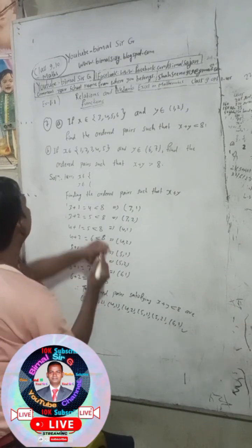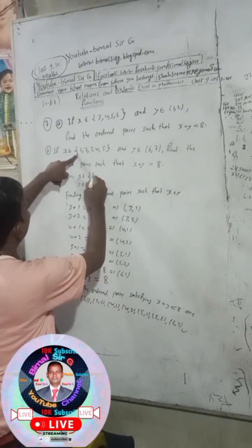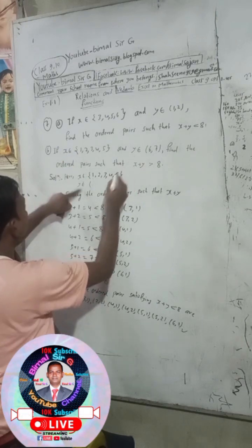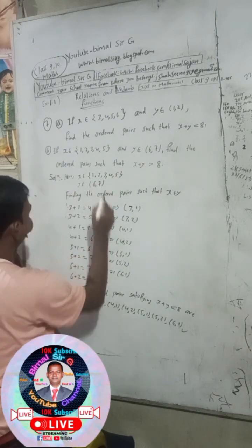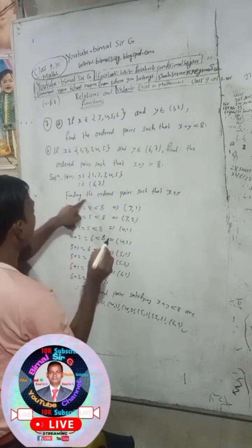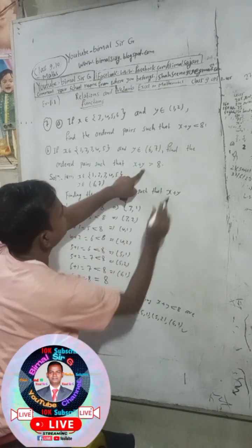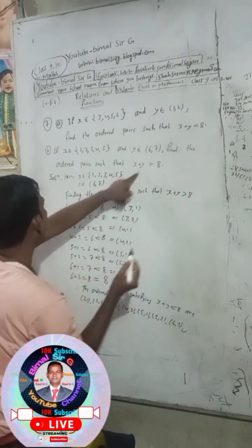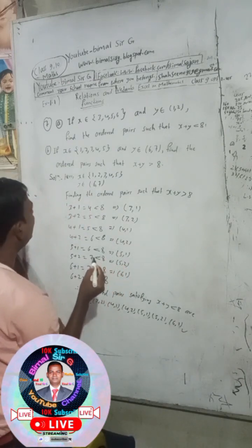Next problem: x belongs to {1, 2, 3, 4, 5} and y belongs to {6, 7}. Find the ordered pairs such that x plus y is greater than 8.